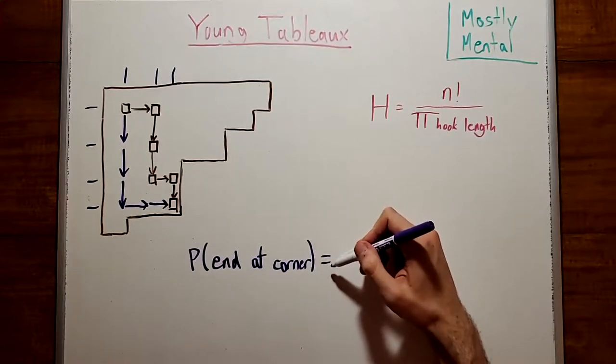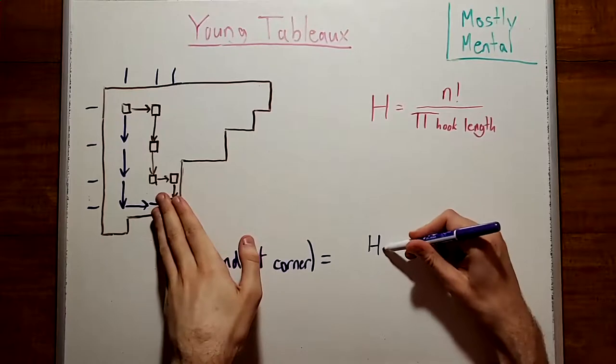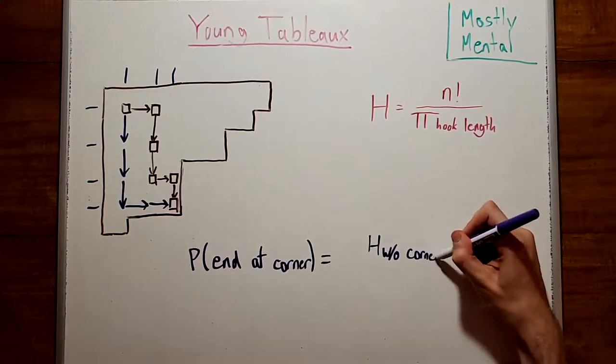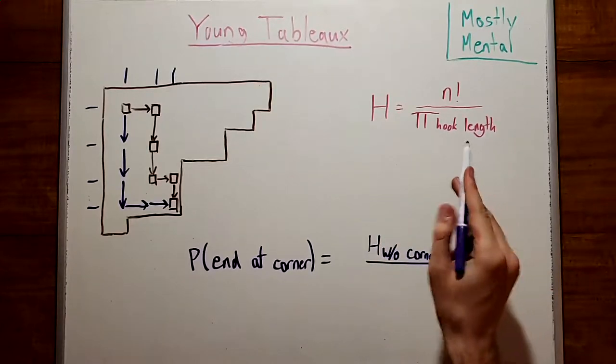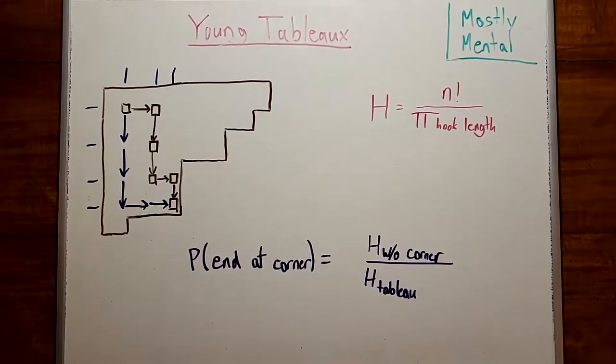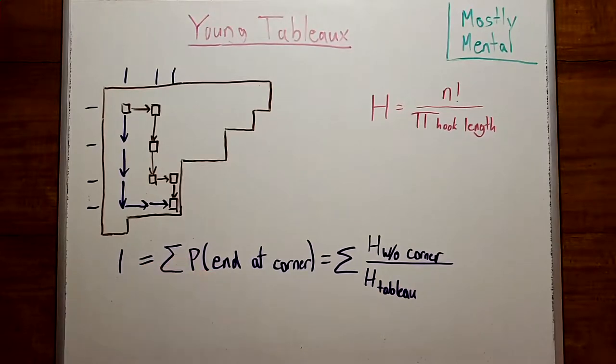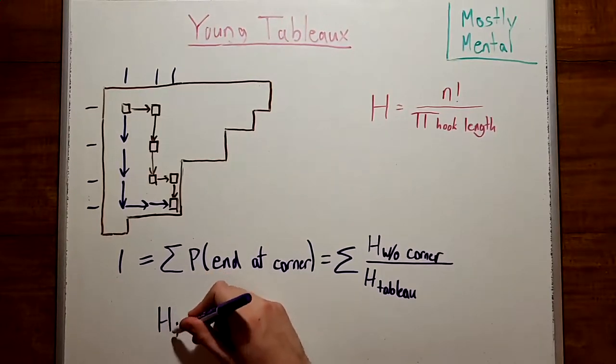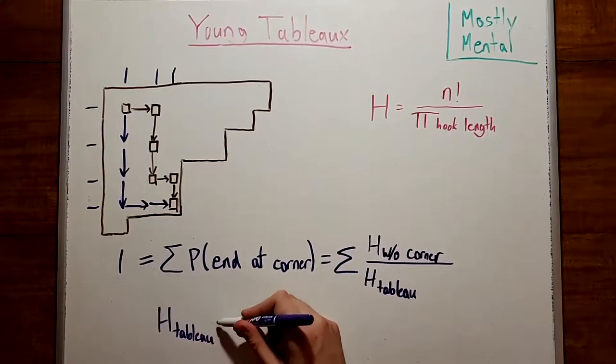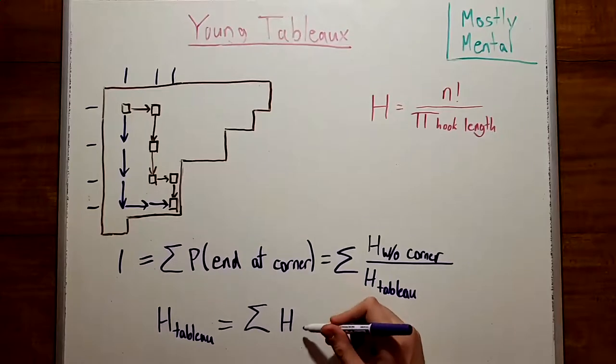With a bit of algebra, this comes out to this hook length formula here, for the tableau with that corner chopped off, so h of the tableau without the corner, divided by the hook length formula for the full tableau.